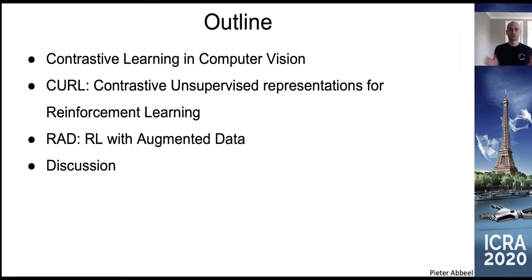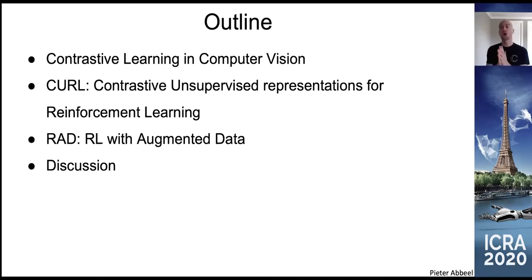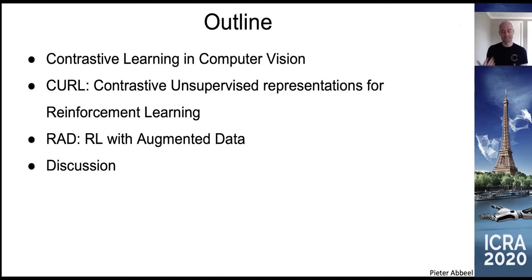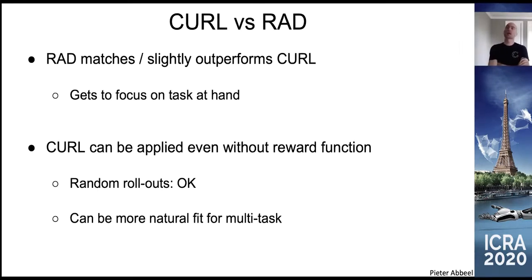To summarize: we started from the question of whether learning from pixels can be as efficient as learning from state. There used to be a big gap. With CURL and RAD, we're actually able to bridge that gap and learn almost as efficiently from pixels as from state in the DeepMind Control Suite. There were still a few exceptions, but we found that in those environments, pixels may actually not contain the state information at all.